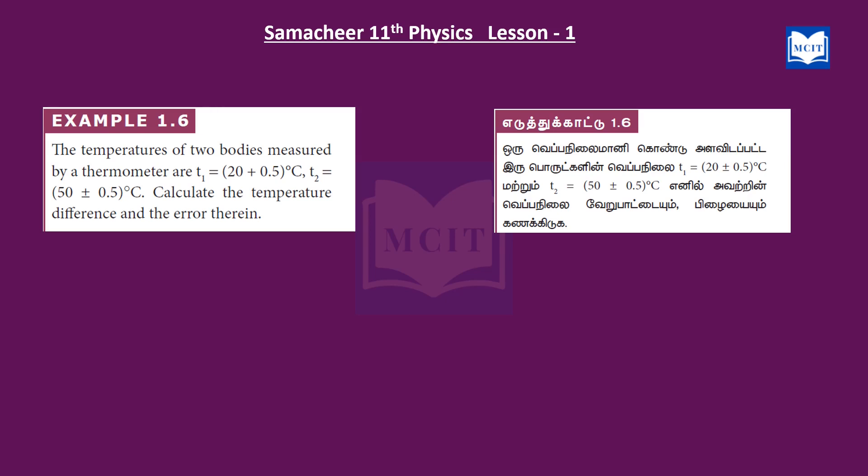Example 1.6: The temperature of two bodies is measured by a thermometer, T1 and T2. Calculate the temperature difference and error therein. We can see the T1 value and the T2 value, and find the difference.